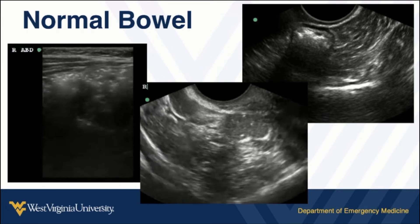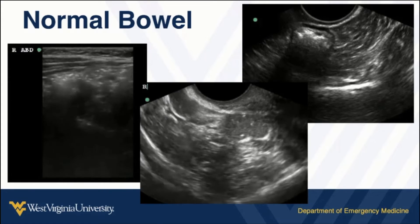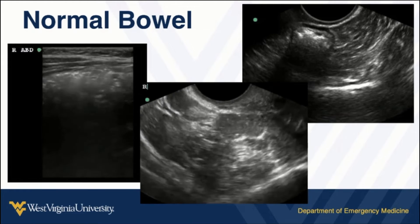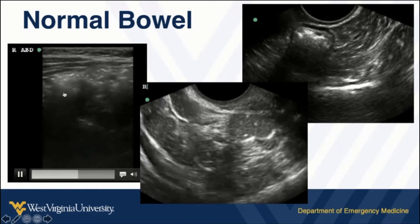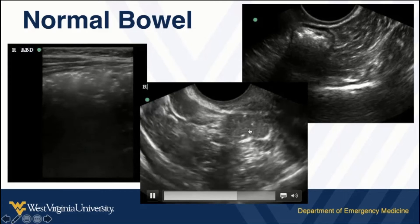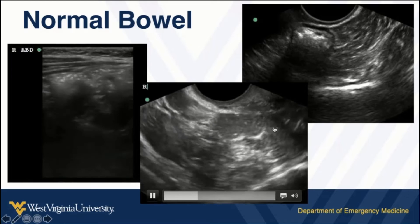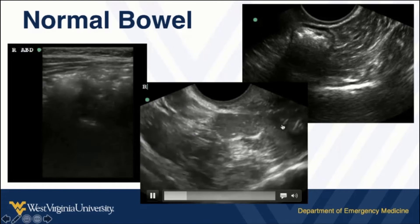There are some pathologies we'll look for in the bowel, although I'm going to save that for a different episode. For now we're going to look at what normal bowel looks like. A lot of times we'll just see this air signature. Sometimes we may see stool within the bowel — this gray area just looks like a black and white image of stool to me, outlined by the bright white wall of the bowel.